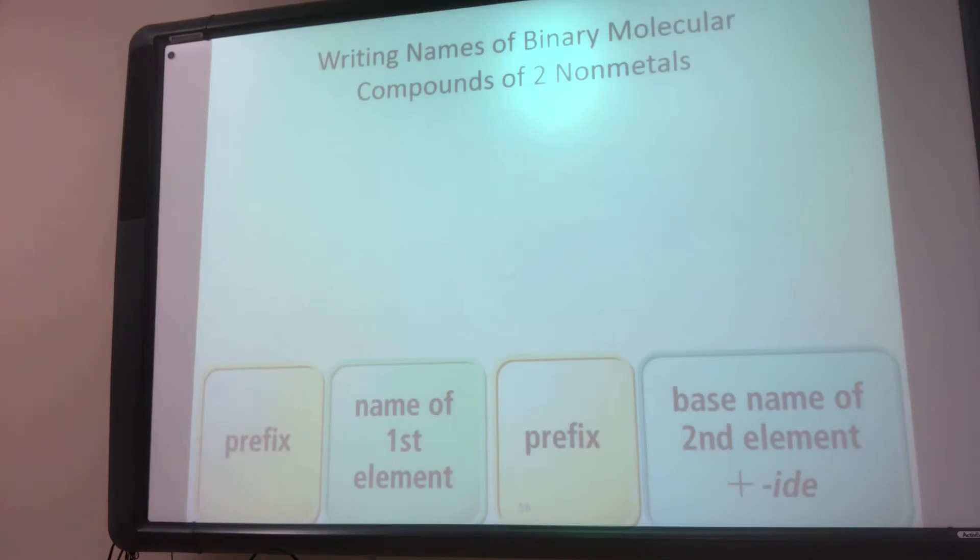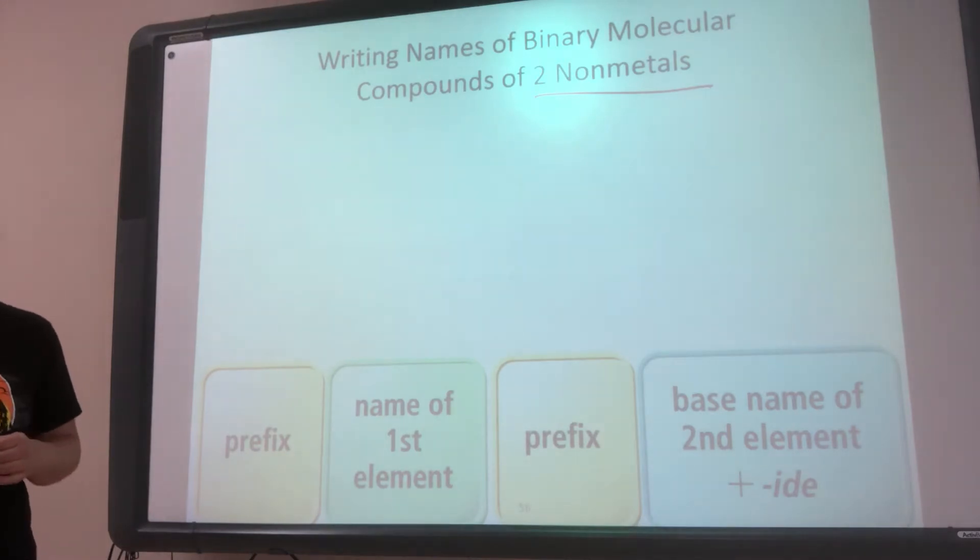For binary molecular compounds, these are ones that have two non-metals. These are the ones that are going to be doing covalent bonding.